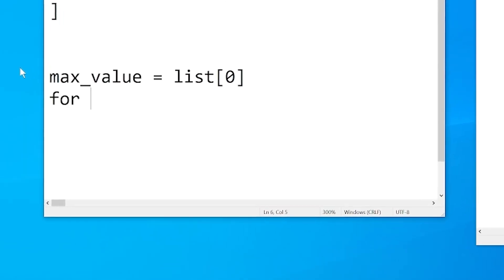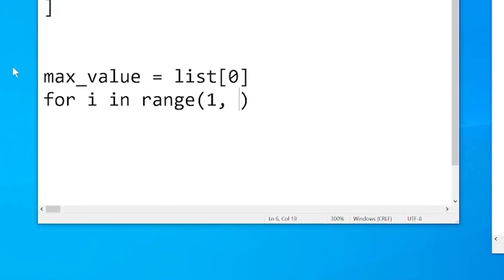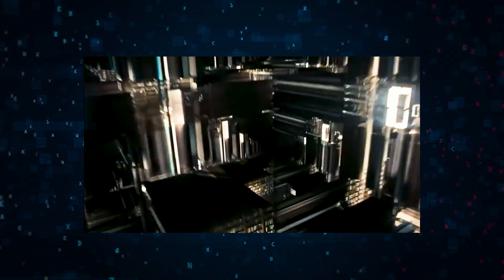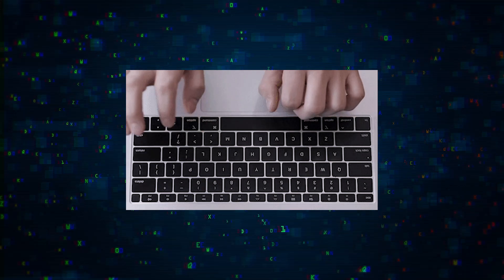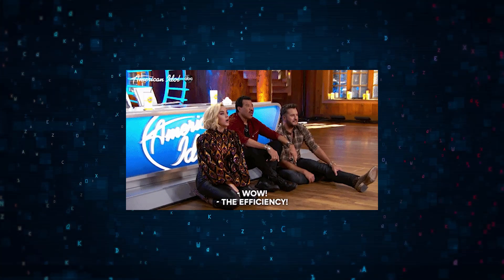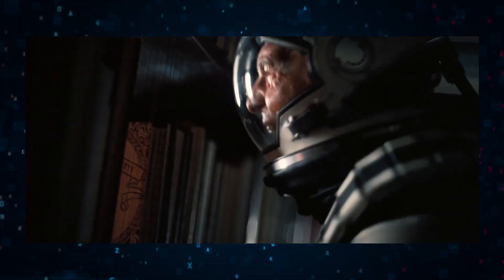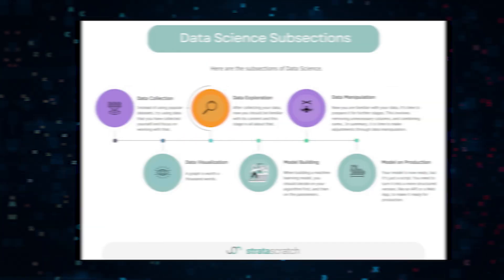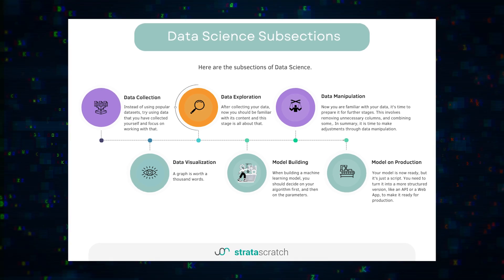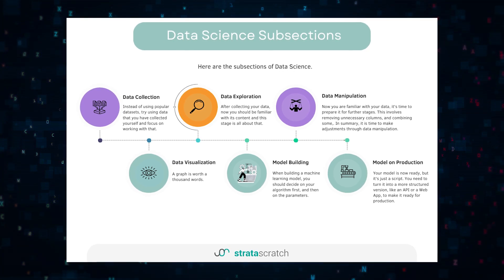Most companies will use Python to complete their projects. But the question is, which libraries should you use to finish your project? You have to be able to complete projects from start to finish, and you have to be efficient at it. That's where knowing which libraries to use and when can really help. So let's take a look at some Python libraries and map them to specific stages in a project.